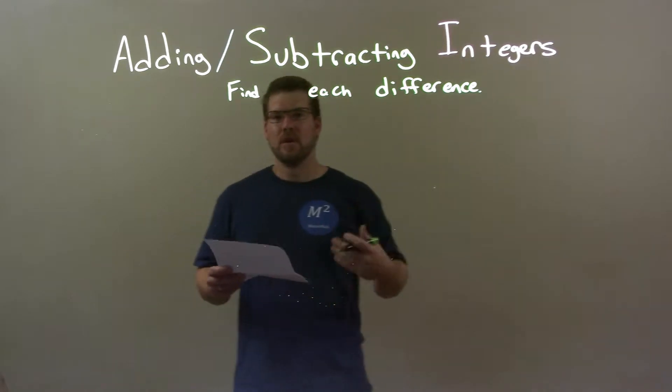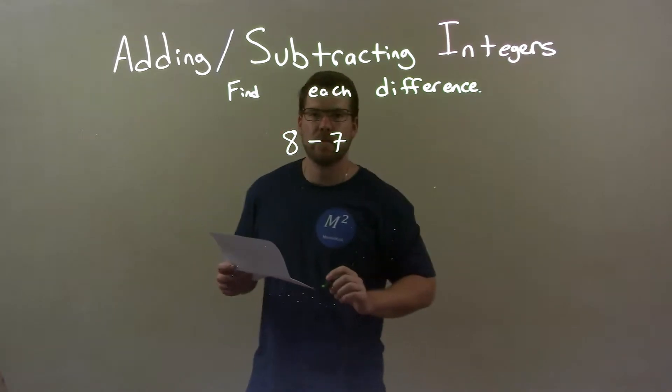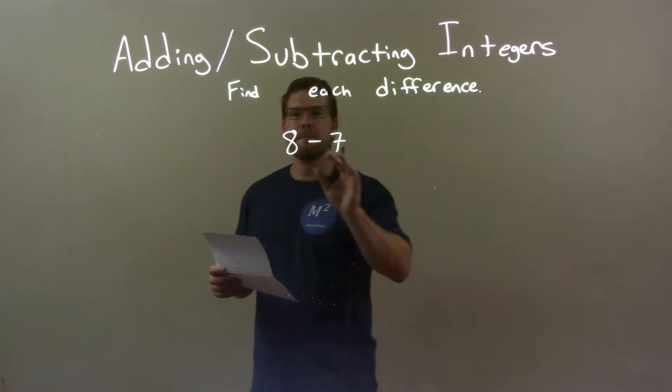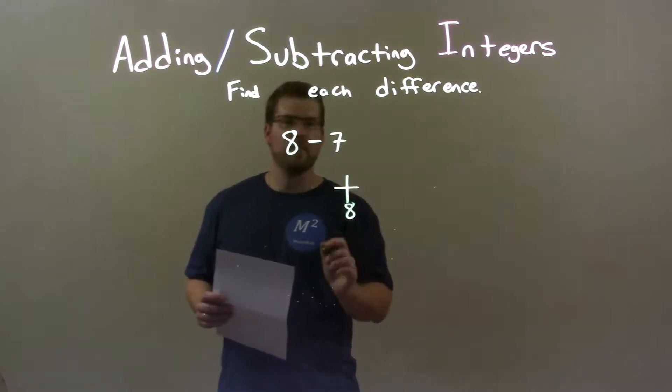So if I was given these integers, 8 minus 7, okay? So if we have 8 minus 7, what we're really doing, let's look at the number line here. So we have 8 right there, okay?